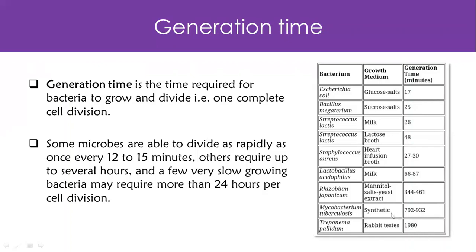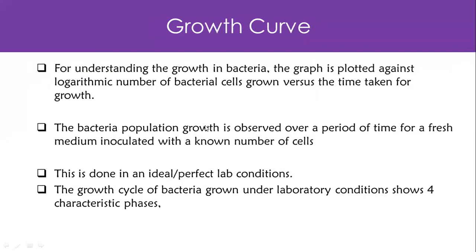For example, if you're dealing with a bacterium that has a longer generation time — like Treponema pallidum, which has a very long generation time compared to E. coli — it will take time for the infection to take hold. Compared to something like E. coli or Staph aureus, the generation time is quite large. It varies from bacteria to bacteria and determines how fast an infection takes a foothold.